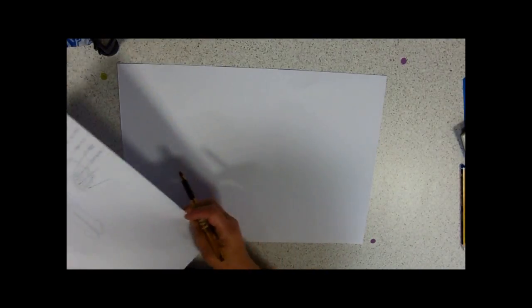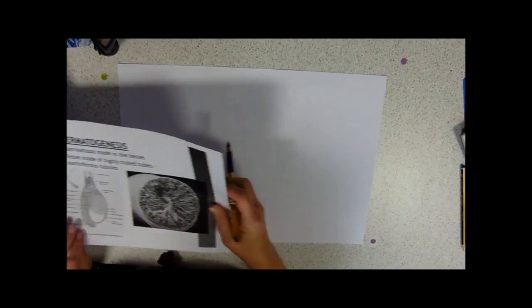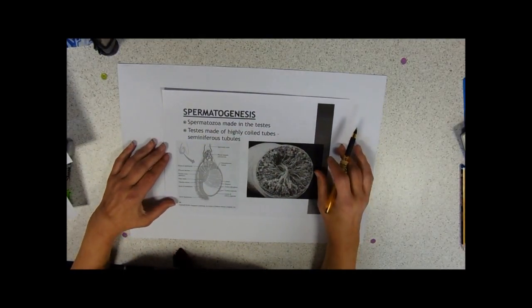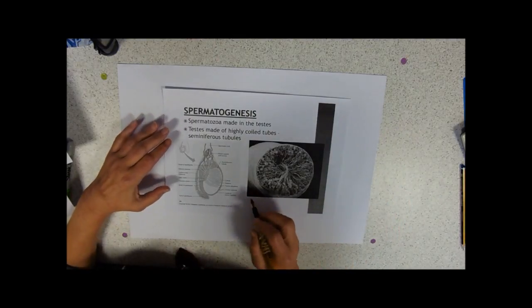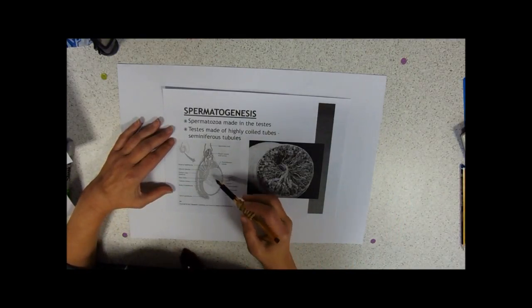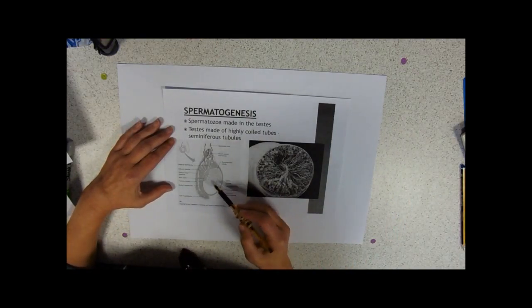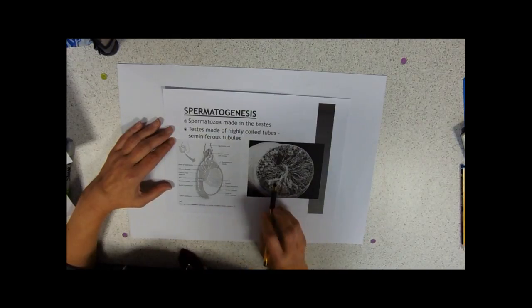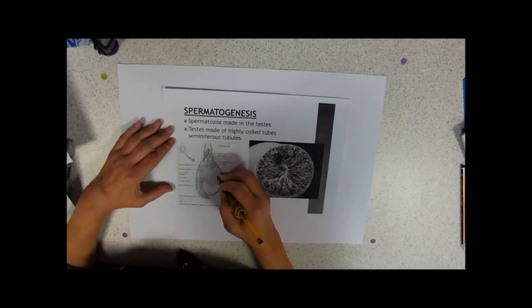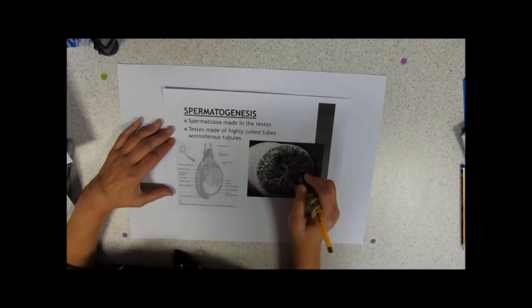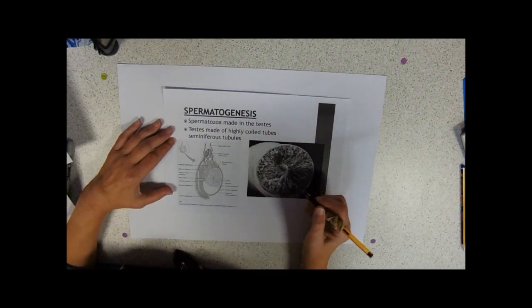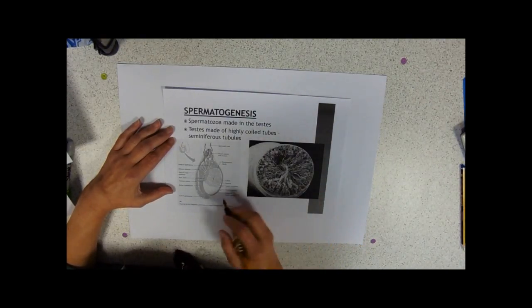So that's the sort of basic structure, shouldn't be too difficult to get a grip on. We're just going to have a look in slightly more detail. Again, complete refusal to draw anything here. So the testis itself is made up of all these little seminiferous tubules. What this diagram over here represents is a sort of cross section through there.